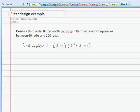Okay, let's look at this filter design example. Design a third-order Butterworth bandstop filter that rejects frequencies between 60 radians per second and 100 radians per second.